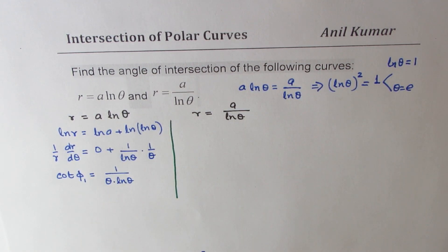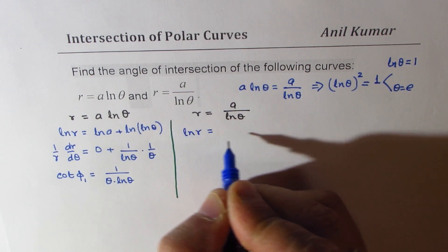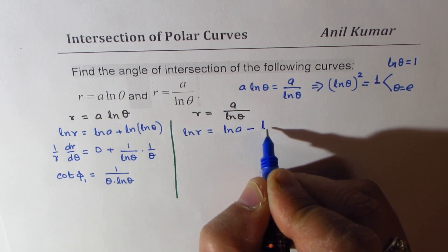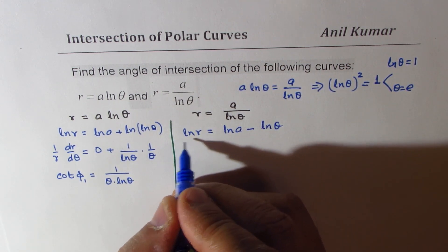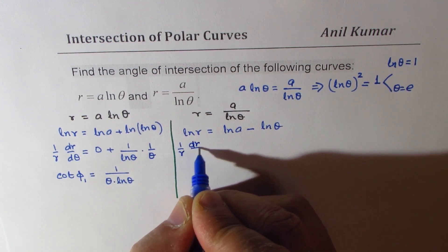Now if you take logarithms for this equation, you get ln r equals to ln a minus ln theta. And differentiating gives you 1 over r dr d theta equals to 0 minus